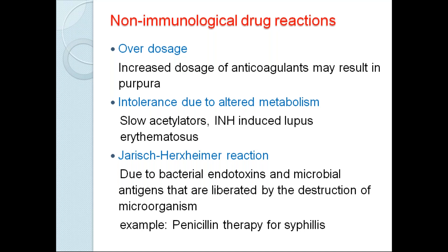Sometimes there will be intolerance due to altered metabolism. Any drug, when it comes into our body, always has a certain pattern of metabolism — how it gets excreted and everything. Sometimes if there is any alteration in this metabolism pattern, there will be accumulation or delayed excretion. An example is isoniazid-induced lupus erythematosus.